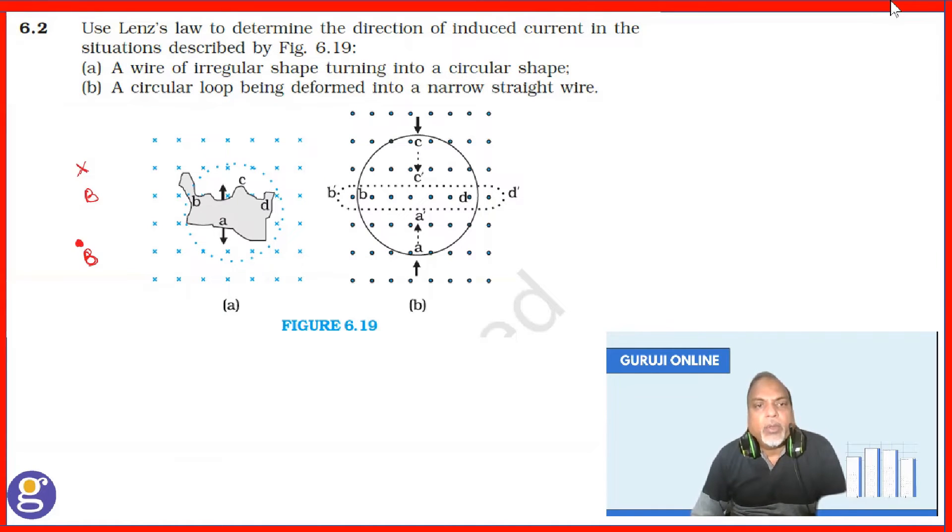For producing the dot magnetic field, what can be the direction? It has to be clockwise.